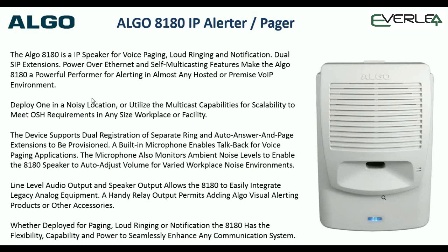On the other side of the coin, we can also use it as a pager. It has a second SIP registration we can set up for a paging unit. So when we dial a SIP extension - for example, 201 - the 8180 will chime for the incoming page and then you can speak through and do paging.